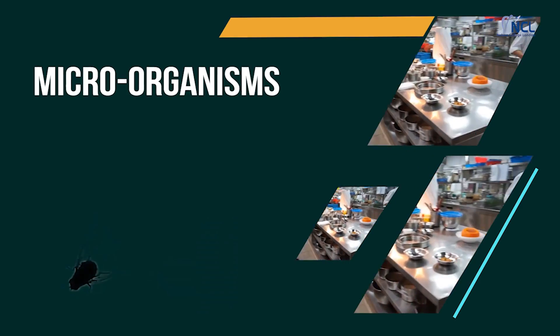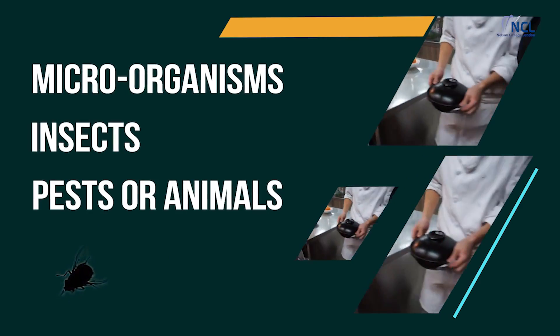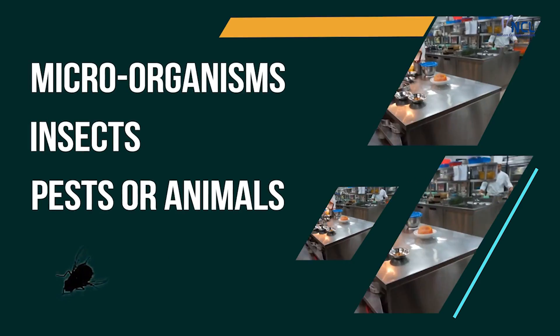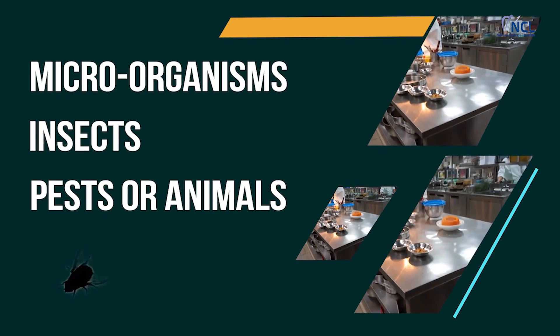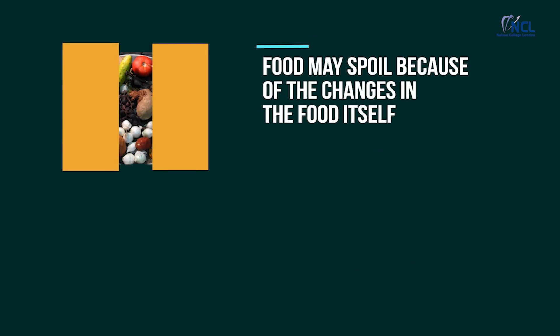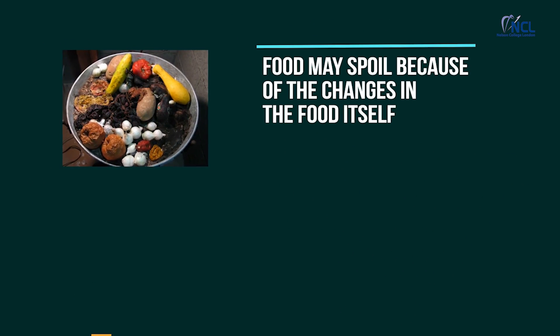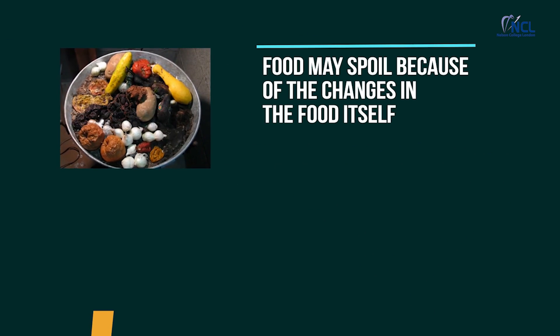Food can spoil and decay due to the action of microorganisms, insects, pests, or pets. Sometimes food may spoil because of the changes in the food itself.